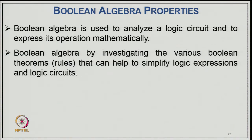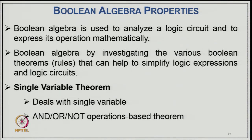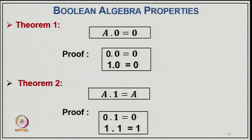Boolean algebra has theorems and rules that help simplify logic expressions. Single-variable theorems deal with single variables using AND or NOT operations. Theorem 1: A·0 = 0. Proof: 0·0 = 0 and 1·0 = 0. Theorem 2: A·1 = A. Proof: 0·1 = 0 and 1·1 = 1. This means ANDing any value with 1 returns the value itself.